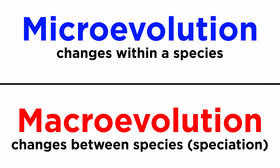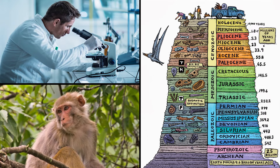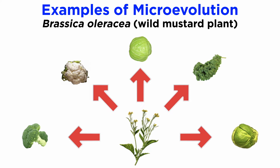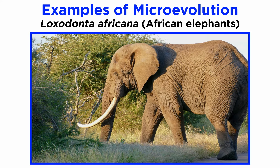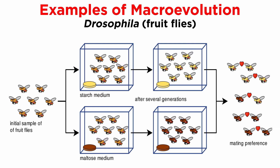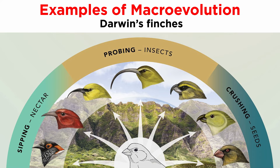The subcategories of evolution, microevolution and macroevolution, respectively refer to changes within a species, and speciation, or changes between species. We see both of these processes in the lab, in the wild, and in the geologic column. Examples of microevolution would include the various breeds of domestic dog, or Canis familiaris, the selective breeding of the wild mustard plant, Brassica oleracea, into numerous modern vegetables, and changes in the tusk size of African elephants, or Loxodonta africana. Examples of macroevolution include the speciation of Ensetina salamanders in California, numerous lab experiments with Drosophila resulting in reproductive isolation, and classically Darwin's finches.